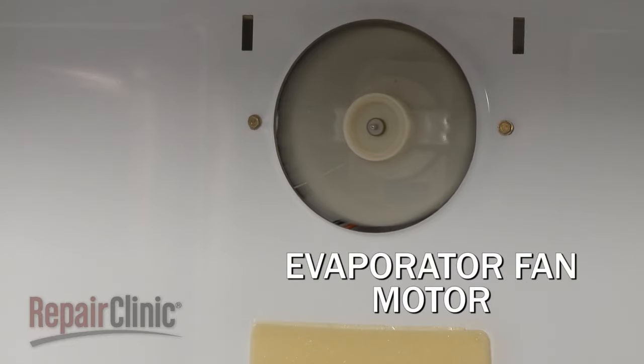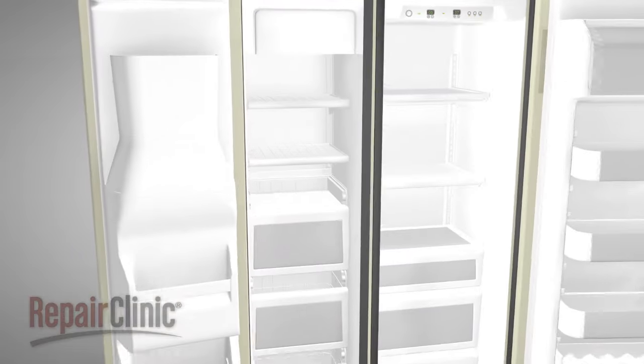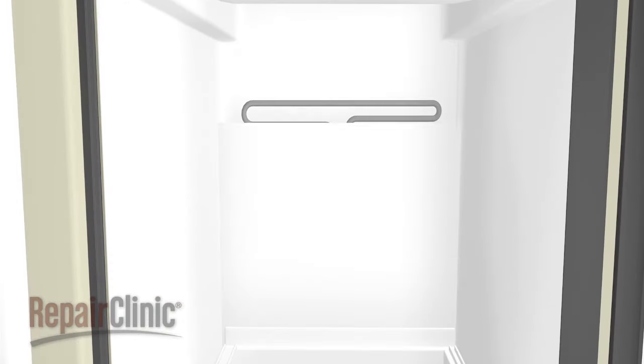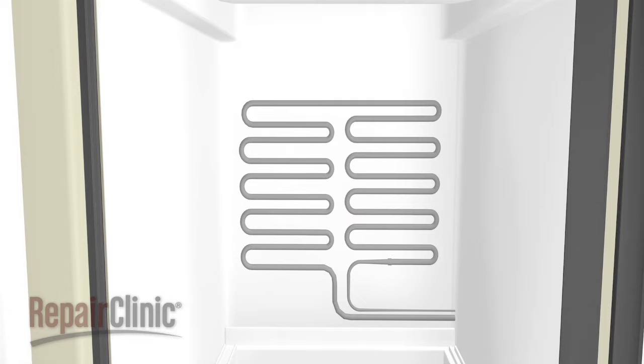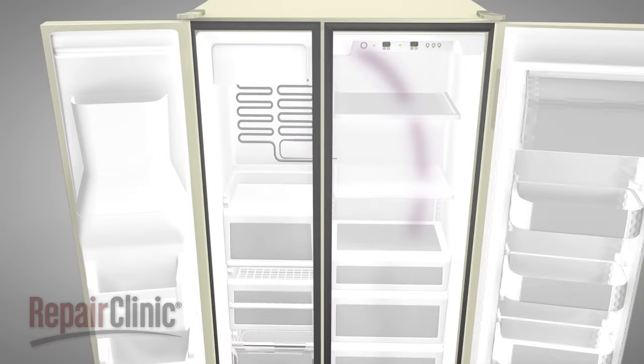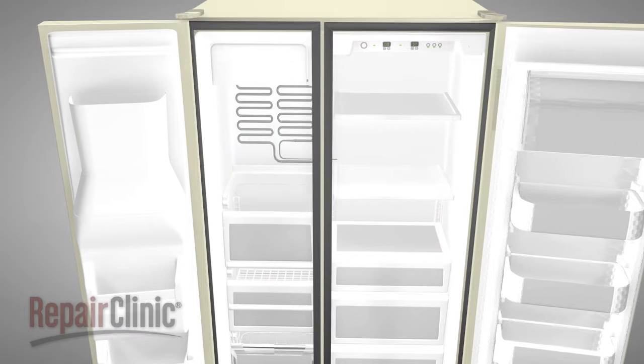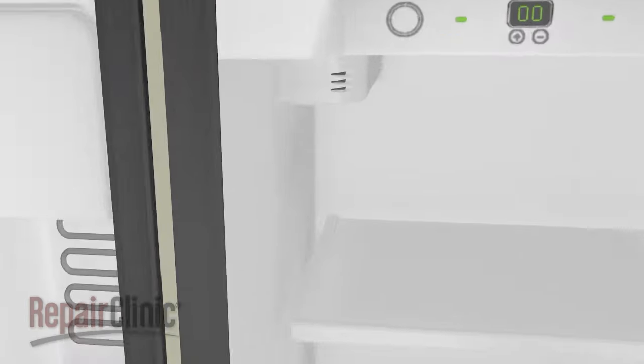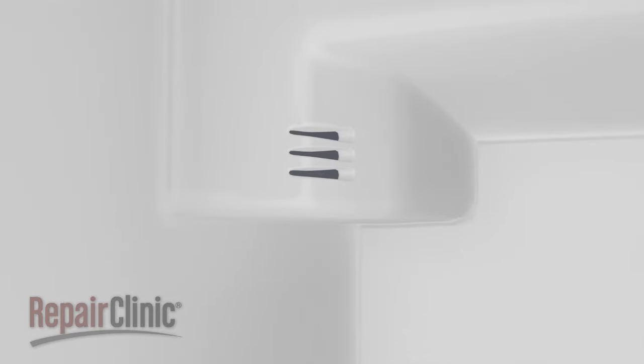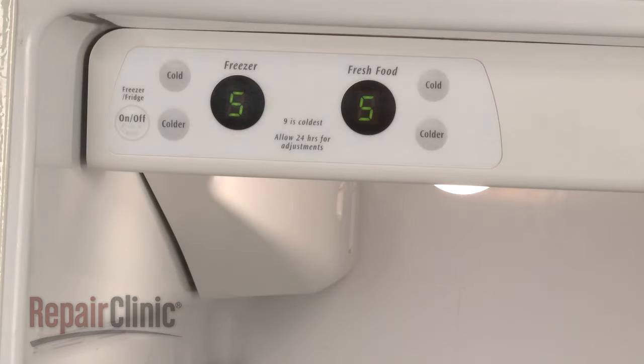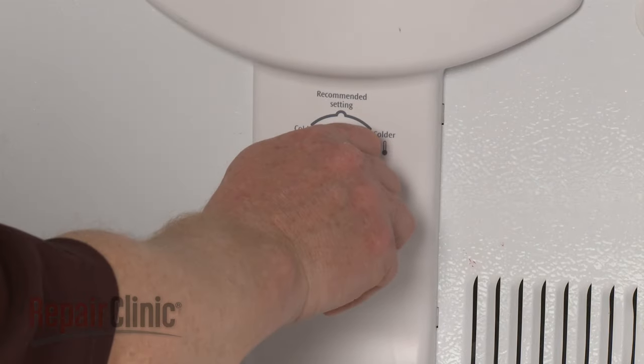At the same time, the evaporator fan draws air from the refrigerator into the freezer. The air passes through the evaporator coils, which remove the heat from the air. The air then circulates back into the refrigerator, continuing the cycle. Most models will have a damper door to control the airflow from the freezer to the refrigerator. This damper may be automatically controlled by a temperature control, or manually controlled by the user.